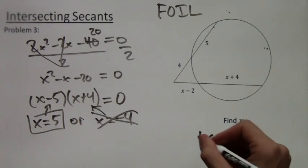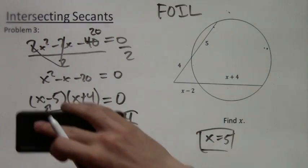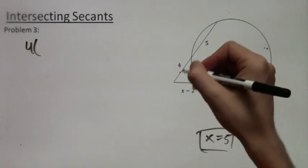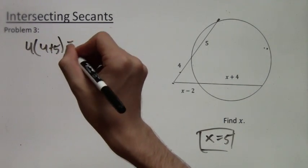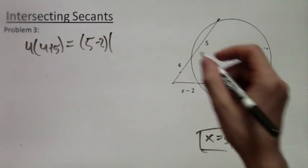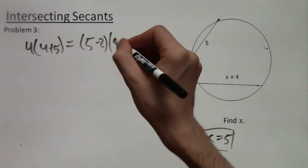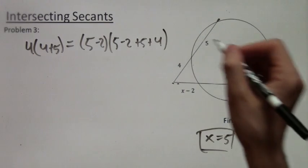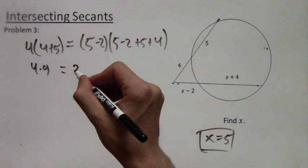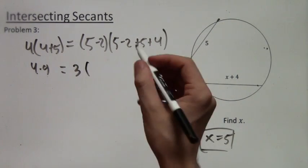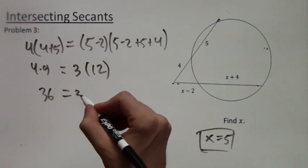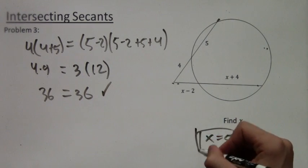And now let's check if it really works. We have x equals 5 is what we hope to be the answer. And if we plug it in, what do we get? 4 times 4 plus 5 is equal to, and x minus 2 is 5 minus 2 times, then we have 5 minus 2 plus 5 plus 4. Because we replaced all instances of x with 5. So that's 4 times 9 equals 3 times, and that whole thing simplifies to 12. And then we get 36 equals 36. And that is correct. So our answer is good. x equals 5.